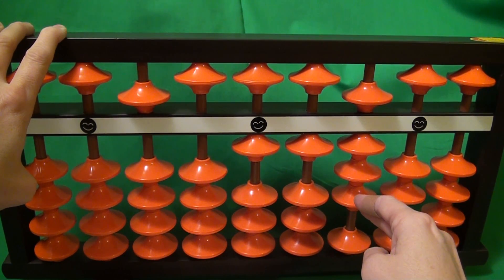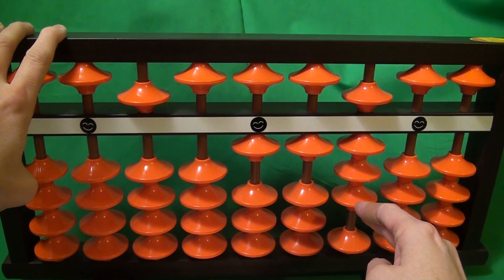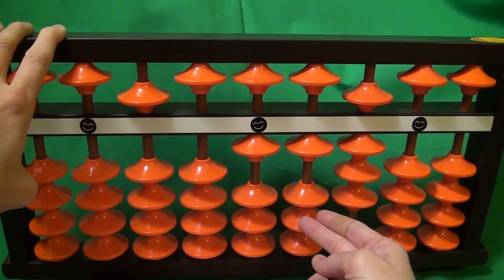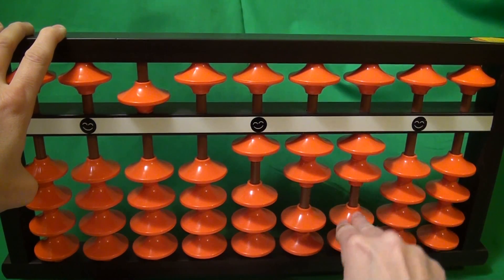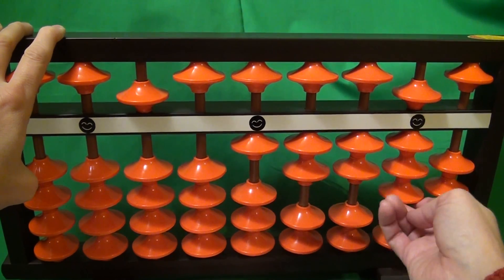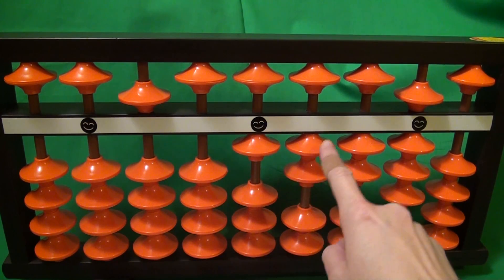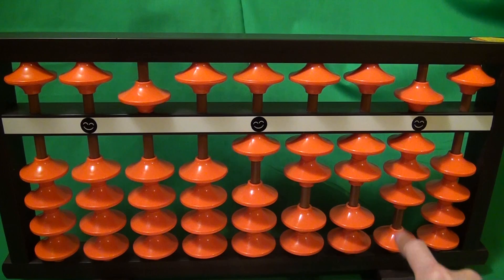And then the last one is 6 times 8. 6 times 8 is 48. So I add a 4 here and an 8 here. Add a 4, add 10, take away 6, and then add 8. So our final answer is 5, 0, 1, 2, 2, 8.